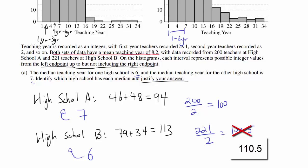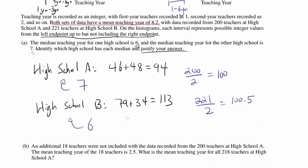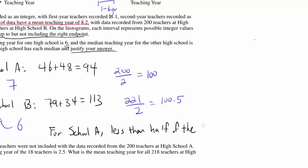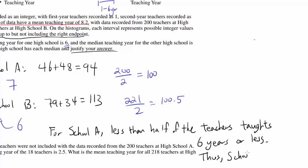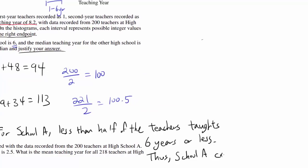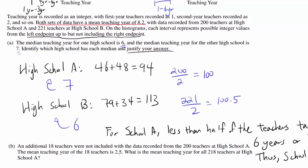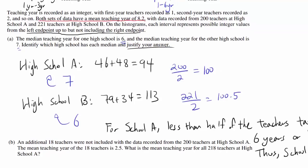If you want to write it out: for school A, less than half of the teachers taught 6 years or less. Thus, high school A cannot have a median of 6 — it has to be larger than 6, meaning its median is 7. Which means high school B has to have a median of 6, and that makes sense. There is no contradiction. Part B.